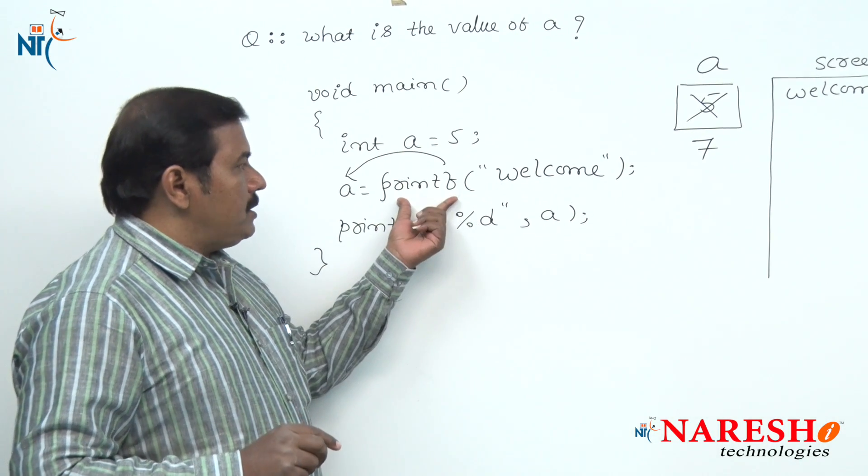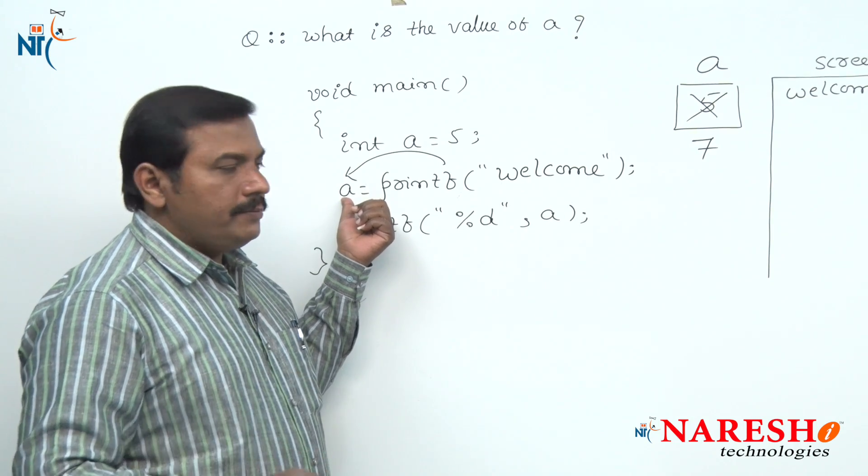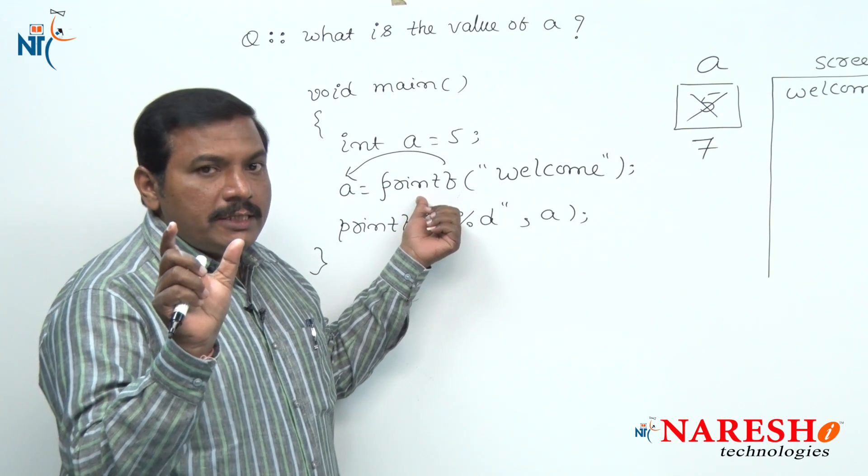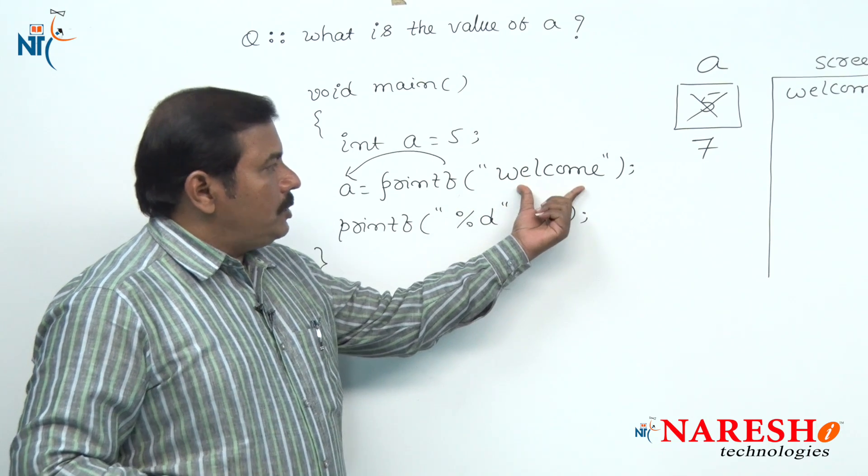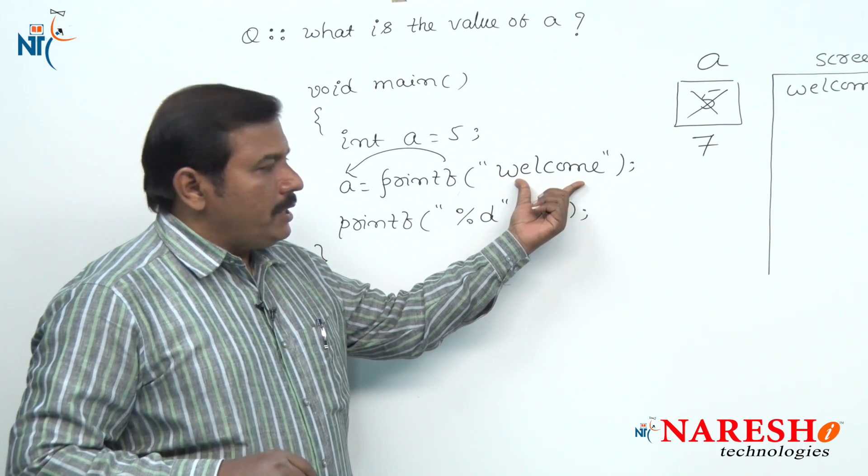Here, why is this printf returning the value 7 into this variable A? The return type of printf function is integer, and the total number of characters in this given string is 7.